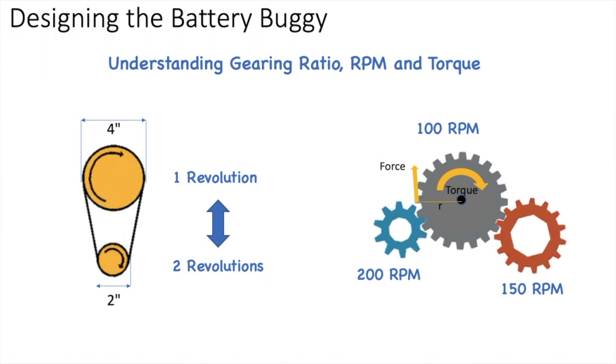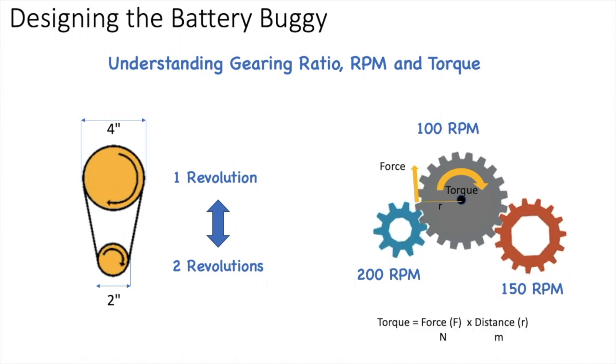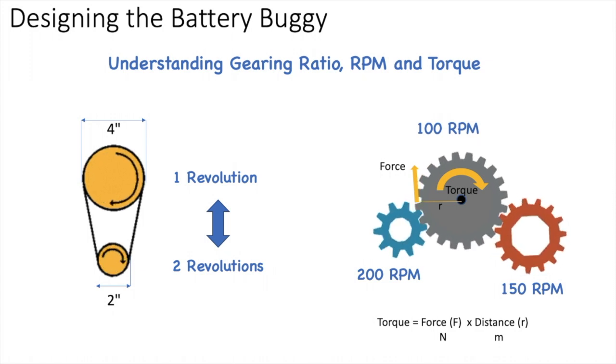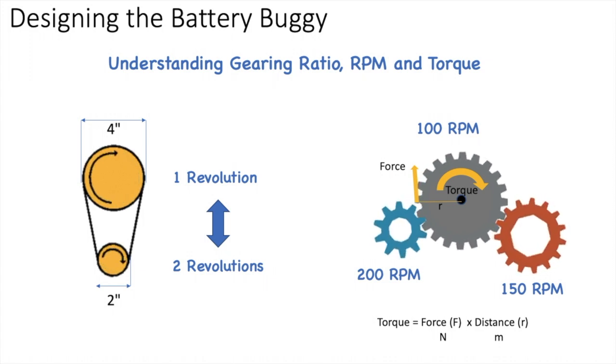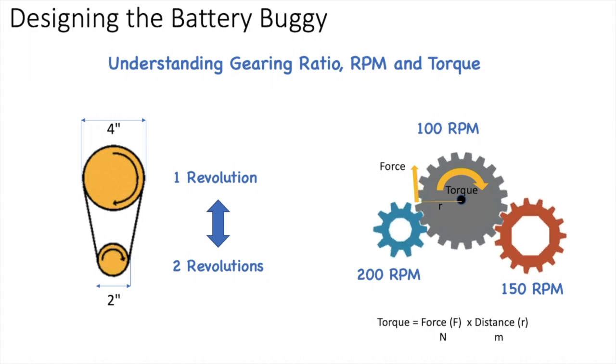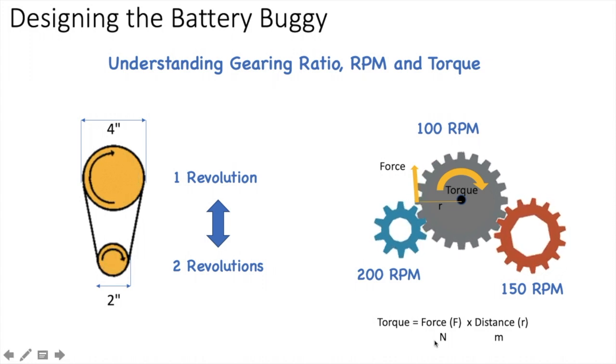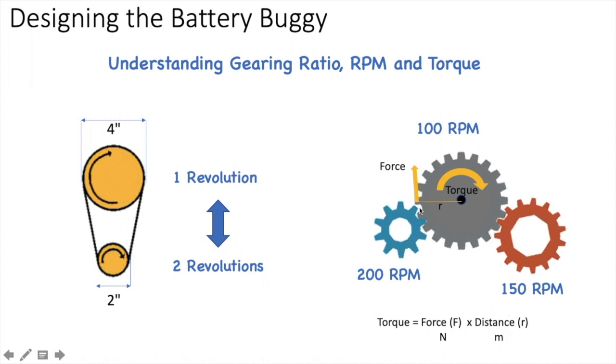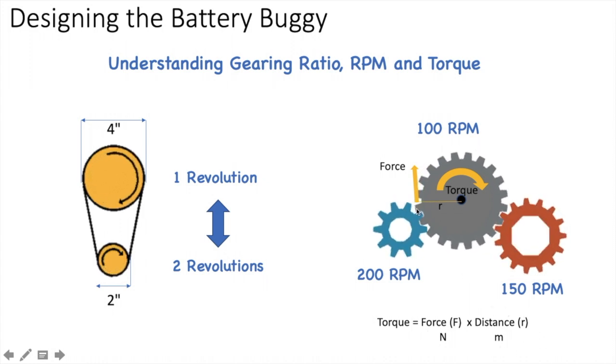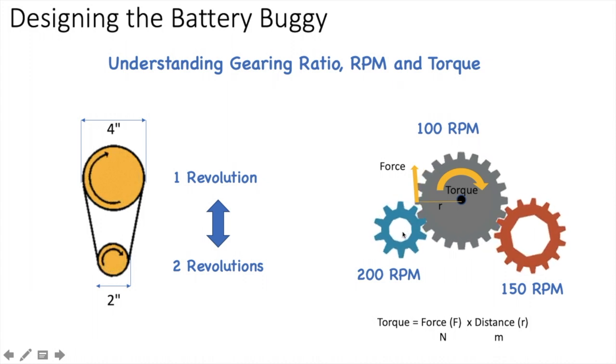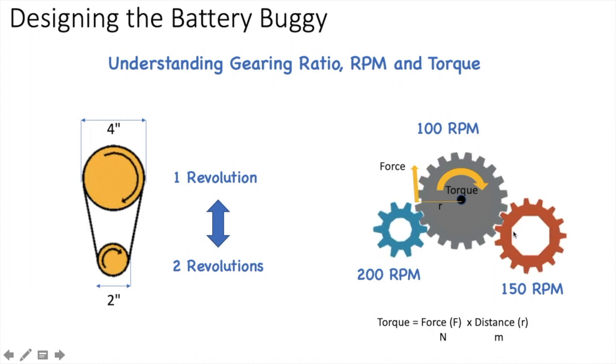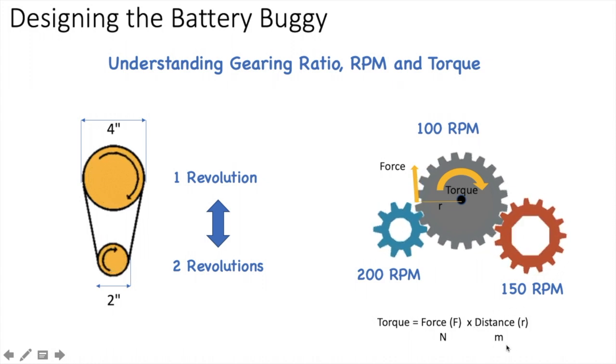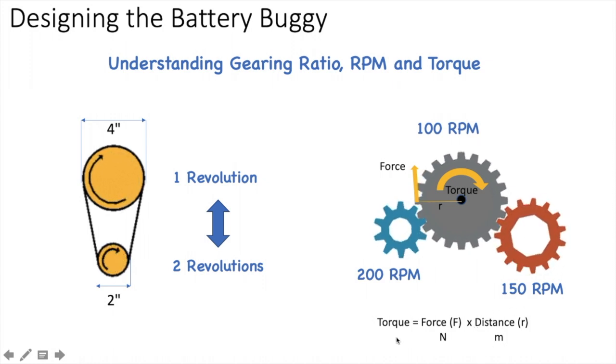This torque is dependent upon the force multiplied by the distance, which is r. So the larger the distance—which means greater the radius or the diameter of the gear—the higher is going to be the torque. It's force times the distance which is equivalent to this twisting torque. The smaller gear here will have a lower torque; the larger gear here is going to have a larger torque because of the bigger radius or the larger distance from the center of the applying force.